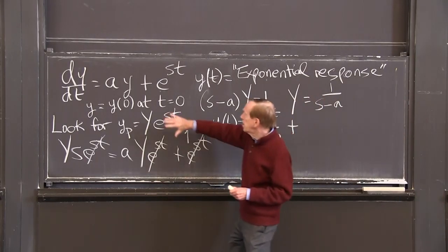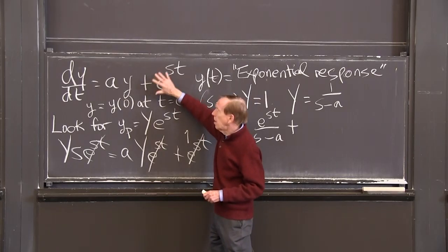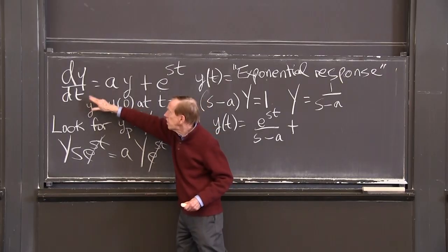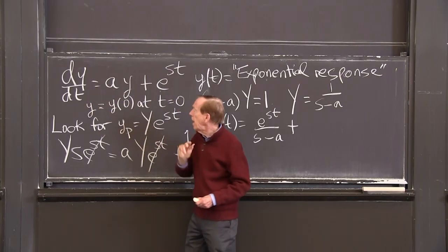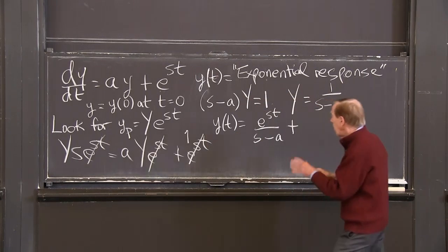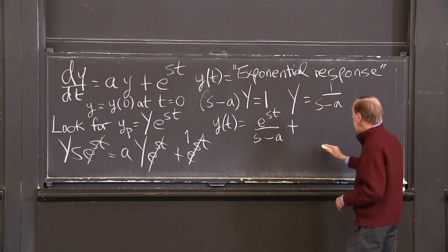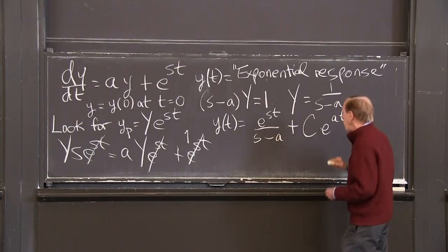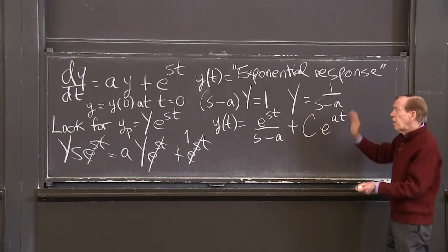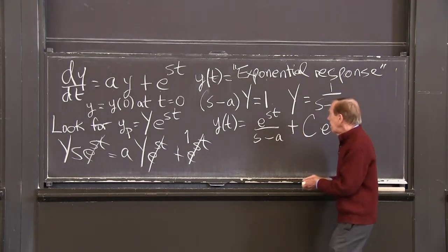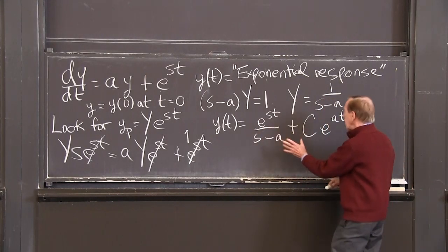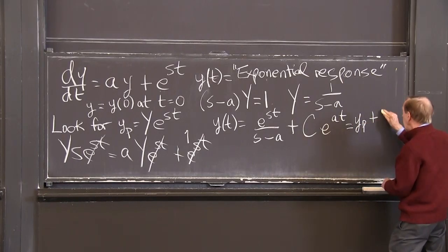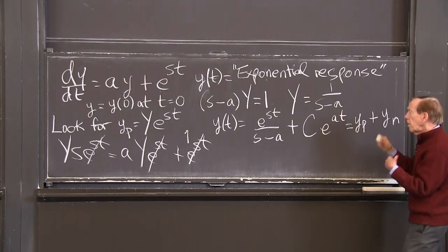So remember, the null solutions: that term is gone, so the source is 0. That's why the word null. So I'm looking for the solution to dy/dt = ay. And the solutions to dy/dt = ay are e^(at) times any number, because the right-hand side is 0. Now, this is y particular, and let me write that. This is y particular, and this is y null or y homogeneous. So that's the general solution.